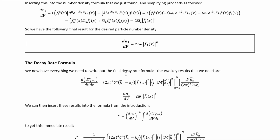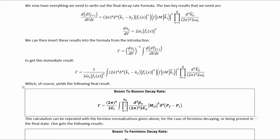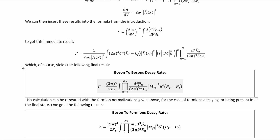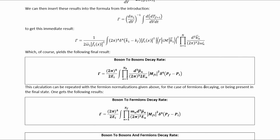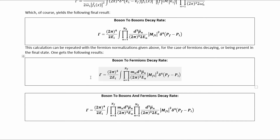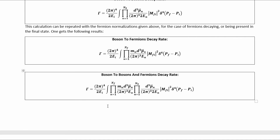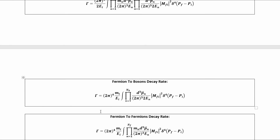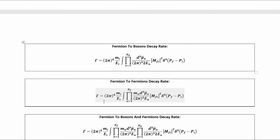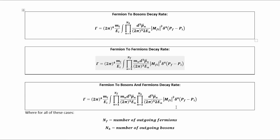We now have everything we need to write out the final decay rate formula. Inserting the two key results — the rate per unit volume and the particle number density — into the preliminary formula and simplifying gives us the final decay rate expression. For a boson decaying to purely fermions, a different formula applies according to the standard normalizations. If a boson decays to a combination of fermions and bosons, yet another formula is used. Similarly, there are distinct formulas for a fermion decaying to pure bosons, pure fermions, or a mix of fermions and bosons.